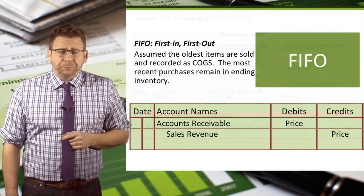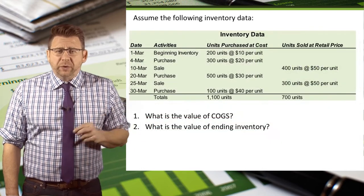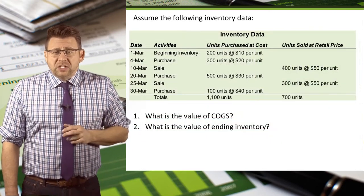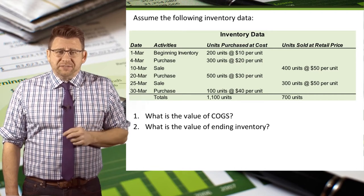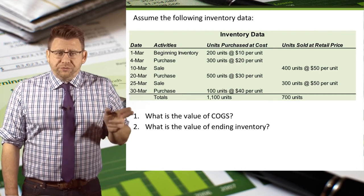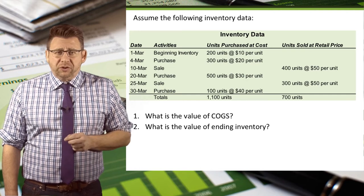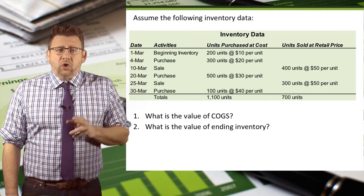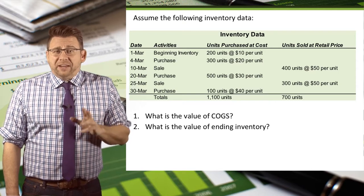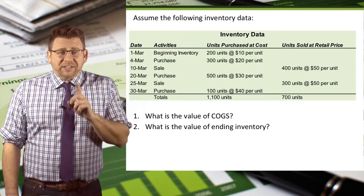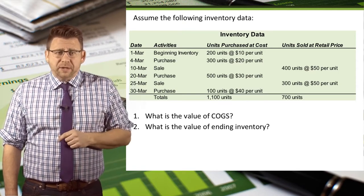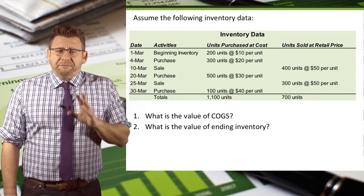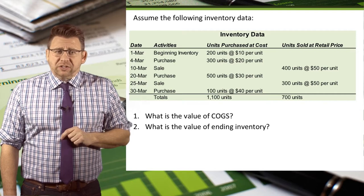Let's look at an example with the following inventory data. March 1st, beginning inventory is 200 units at a cost of $10 each. March 4th, we purchased an additional 300 units at $20 each. March 10th, we sold 400 units at $50 each — that's the retail price, not the cost. March 20th, we purchased an additional 500 units at $30 each.